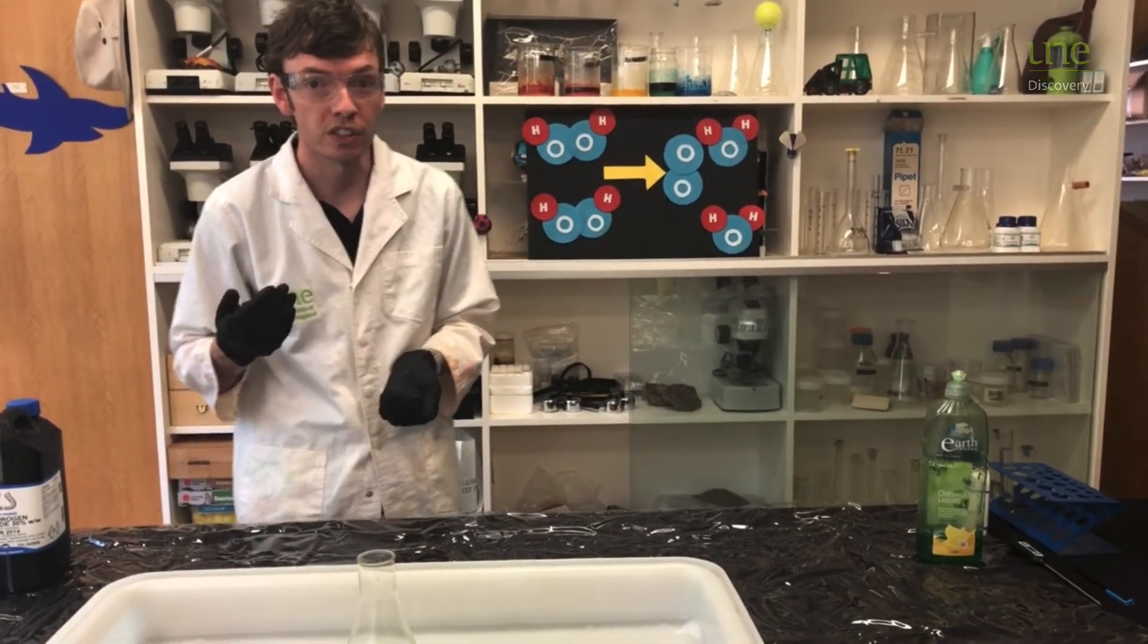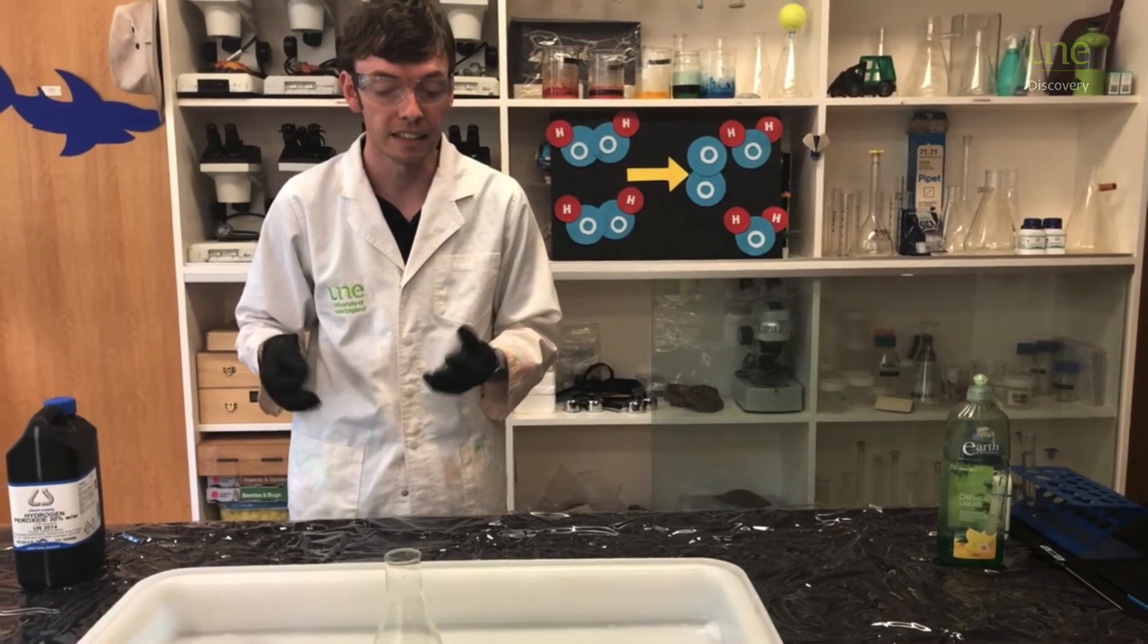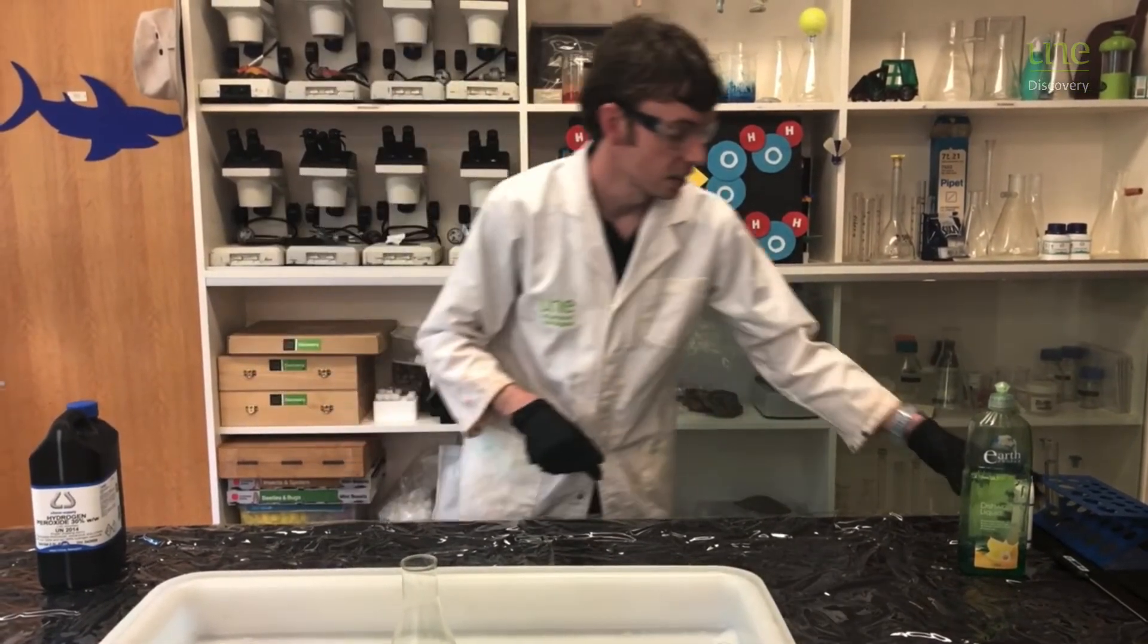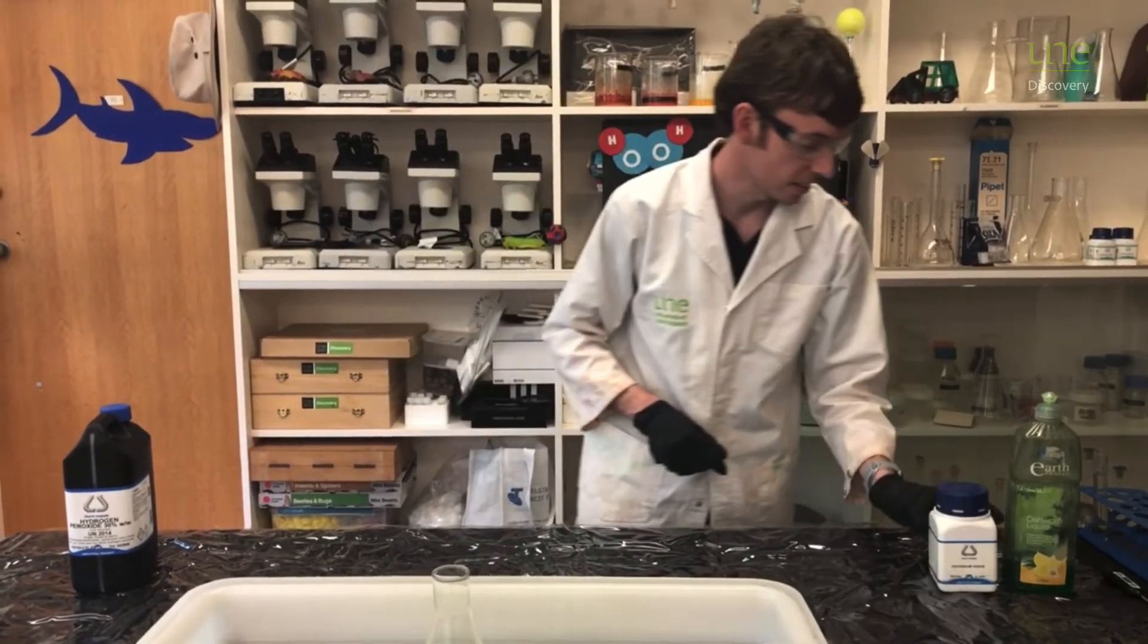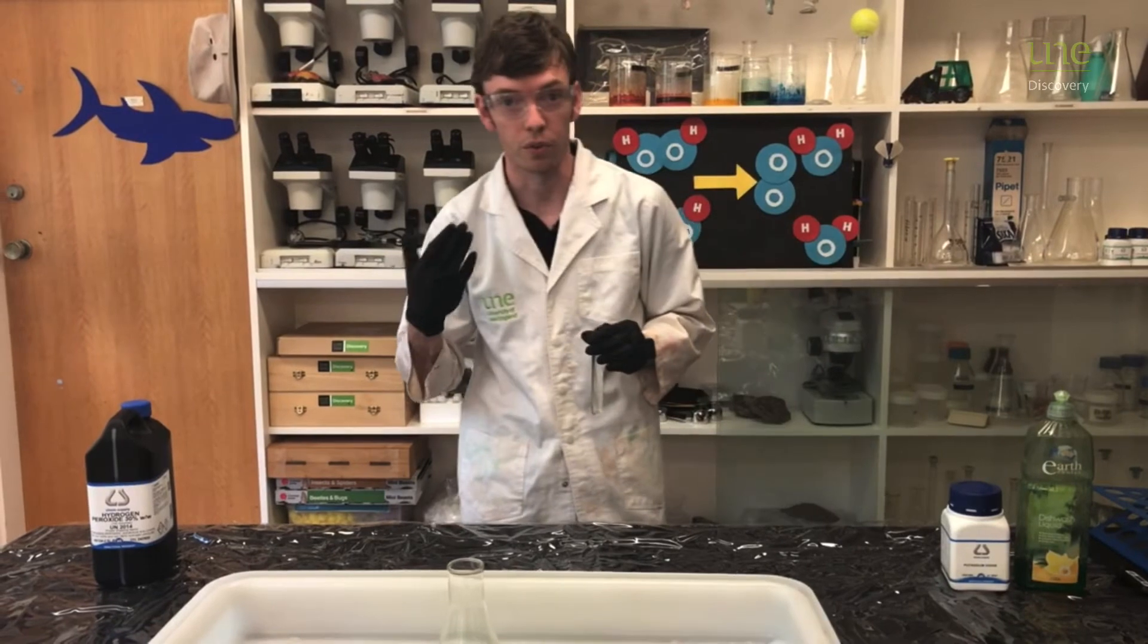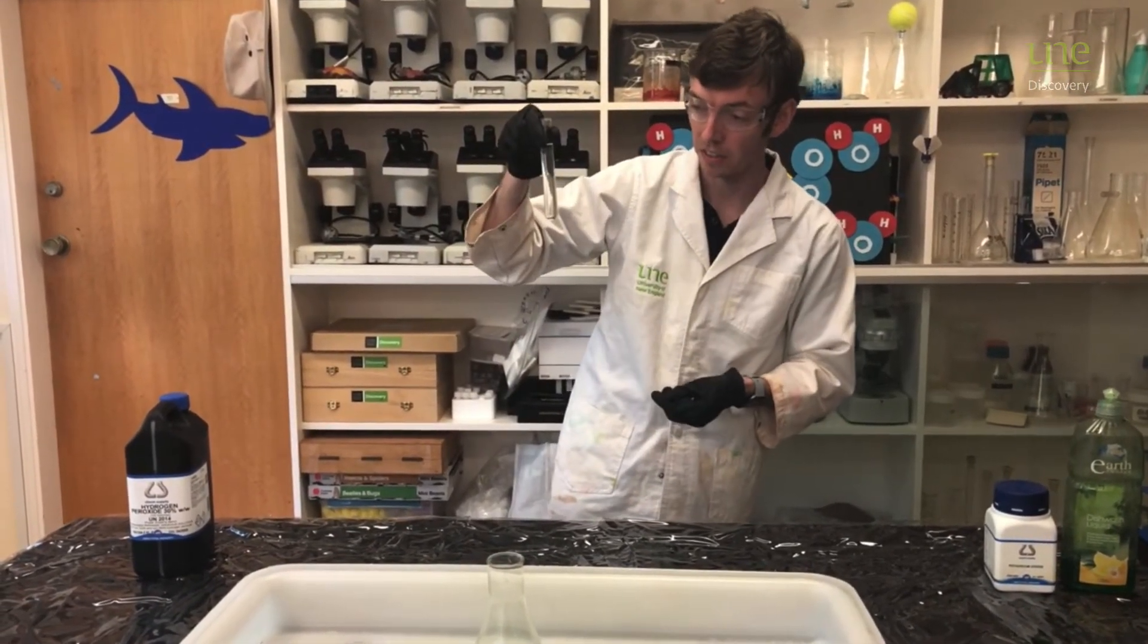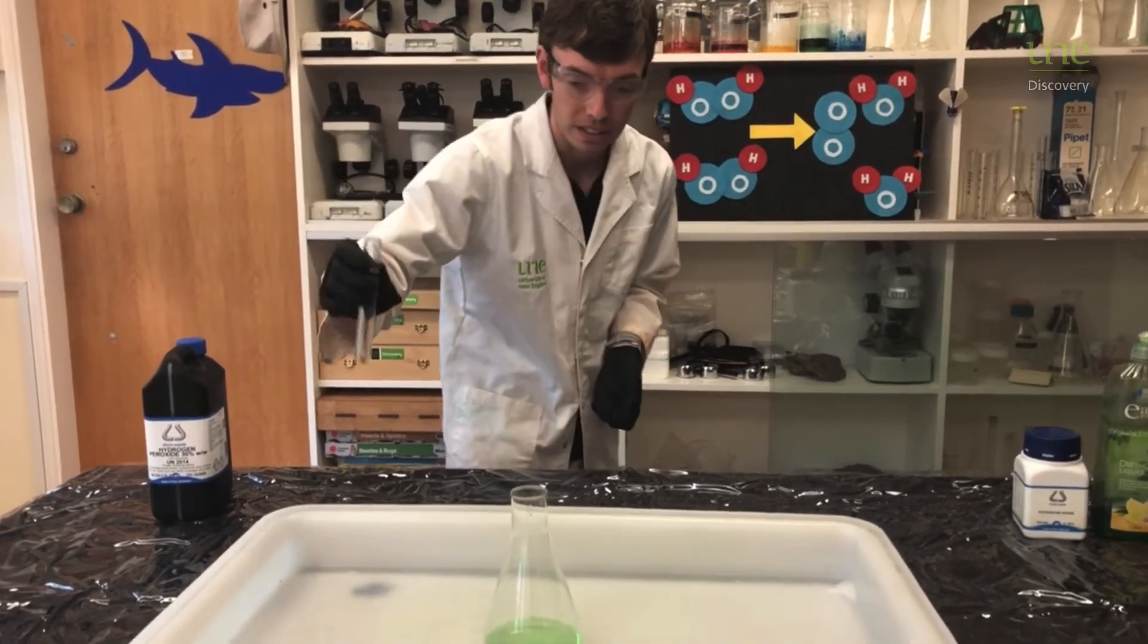We could also use something like yeast. Yeast has a little enzyme in it called catalase that helps that reaction start. But today I'm going to use some potassium iodide. This stuff makes it go really, really fast. Are you ready? So here's a mixture of potassium iodide that I've mixed up before. Let's see what happens when I pop this in.